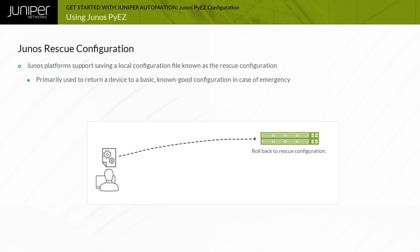A rescue configuration can be created at any time using the Junos CLI operational mode request system configuration rescue save command. When the command is issued, a copy of the device's active configuration is created and saved as rescue.conf.gz on the local device. Only one copy of the rescue configuration is permitted.